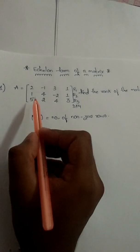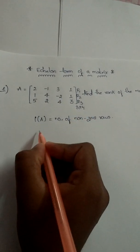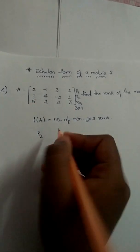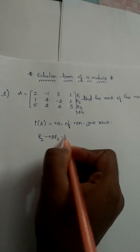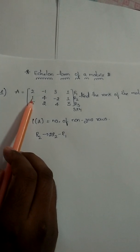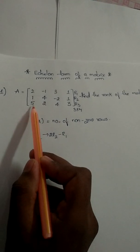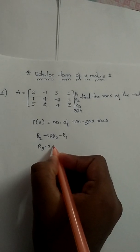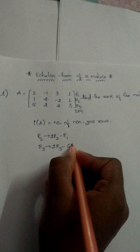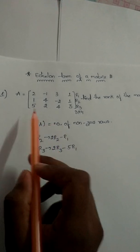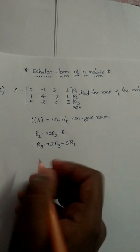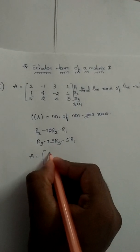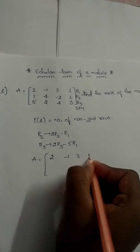To make row two's first element zero, we apply: R2 → 2×R2 − R1. Here, 2×1 − 2 gives zero. Next, to make the third row's first column element zero, we apply: R3 → 2×R3 − 5×R1. There is no condition for the first row, so we keep it as: 2, −1, 3, 1.